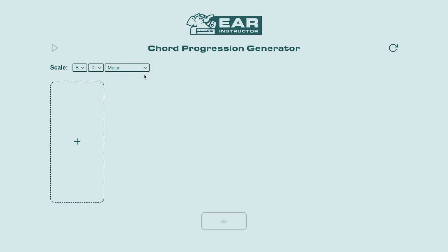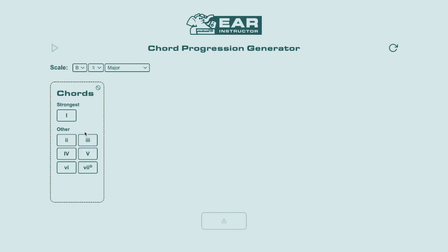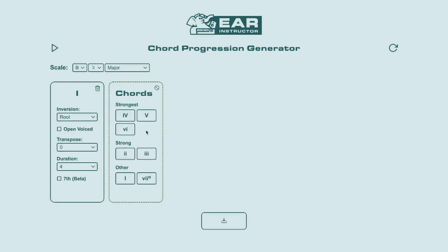Now, to start adding chords, click in the placeholder with the plus icon. This will give you a list of chord options with a strength rating. It'll be easier to understand if I go ahead and select this chord, and then click to add another. So there are three strength ratings: strongest, strong, and other.